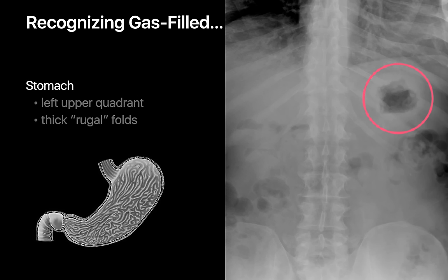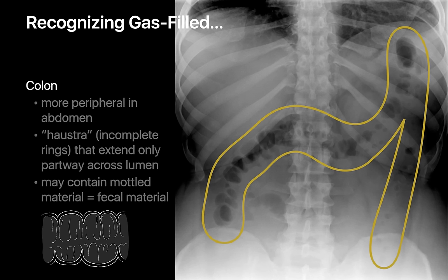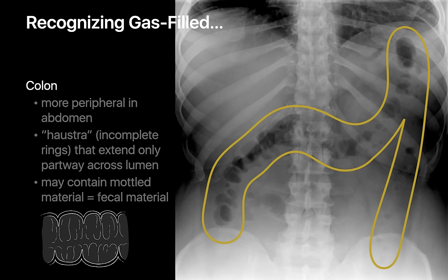Gas inside the stomach can be recognized by its location in the left and/or midline upper abdomen and the thick rugal folds outlined along the margin of the gas pocket. Gas inside the colon can be recognized by its more peripheral distribution and repetitive transverse bands partially interrupting the gas column, which correspond to the colonic haustra. Mottled material corresponding to stool is also helpful in identifying the colon. Gas inside the small bowel can be recognized by its more central distribution and faint, tightly packed transverse bands corresponding to the valvulae conniventes, which are thinner, uniformly spaced, and closely spaced compared to colonic haustra.